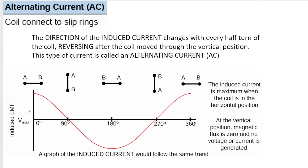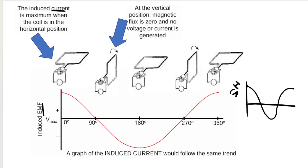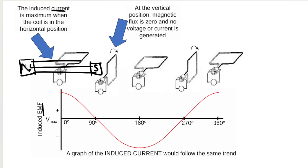Here's another image that might explain it better. The induced current and induced EMF graphs will look similar — a graph of induced current would follow the same trend, just with the y-axis labelled in amperes and the x-axis in degrees, but the same shape. This is when the coil is in the horizontal position. Remember, there will be a magnet on each side — a north and a south — with field lines going across. When this is the case, the current is at a maximum.